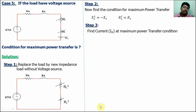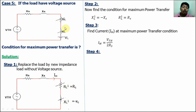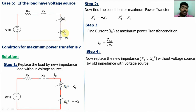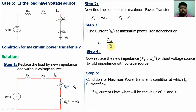Step 3 — find the current IM at the maximum power transfer condition. With RL' equals RS and XL' equals minus XS, the total reactance is zero, so by Ohm's law IM equals VTH divided by (RS plus RS) equals VTH divided by 2RS. Step 4 — now consider the original circuit with the internal voltage source restored. Find the circuit parameters RL and XL at which the current IM flows in the circuit. If IM flows in the circuit, maximum power is transferred.